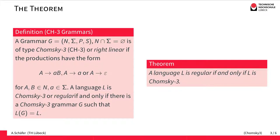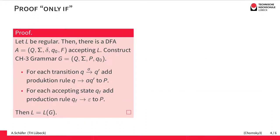Now we want to prove this theorem. We've already seen that there is a close connection to finite automata, and this is the connection we are going to exploit in the proof. As the theorem says that the regular languages and the Chomsky 3 languages are the same, we have two directions to prove.